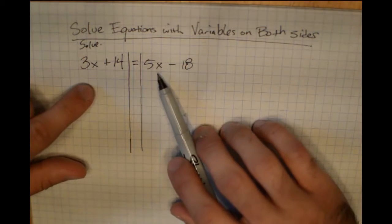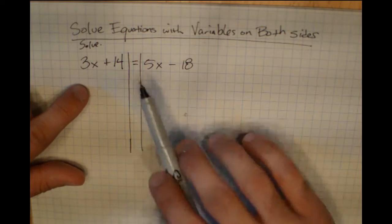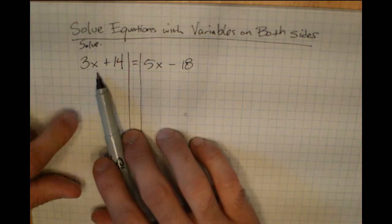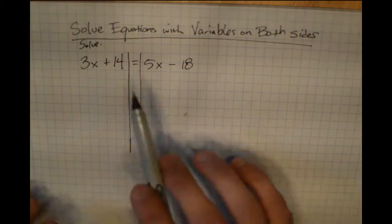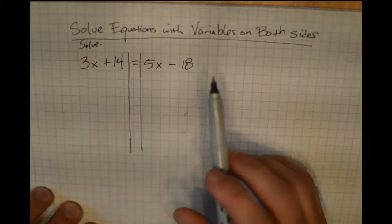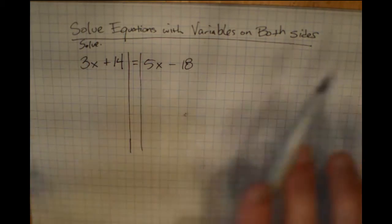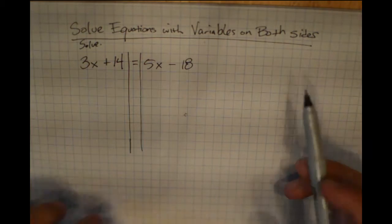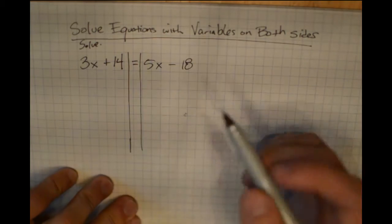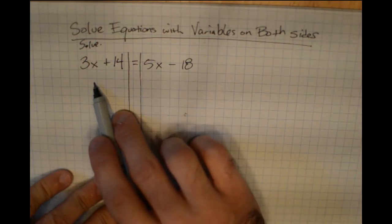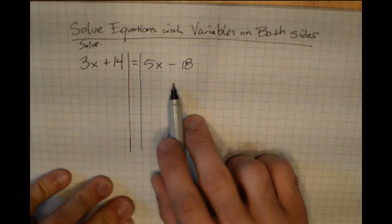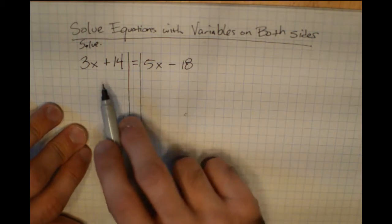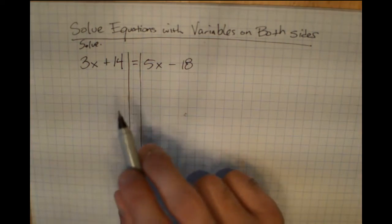In solving this, we need to pick a side that we want the variable to be on and a side we want the number to be on, then do inverse operations until that's what we have. I personally prefer having the variable on the left and the number on the right.